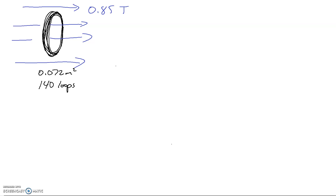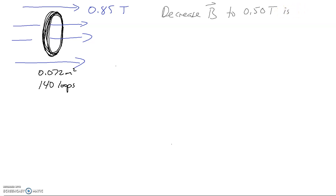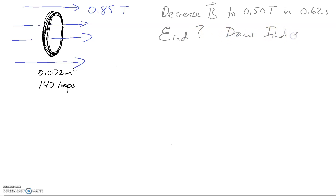In the last few videos, we've been working on both Faraday's Law and Lenz's Law, so let's see if we can bring some of those ideas together here. We've got 140 loops of wire with an area of 0.072 meters squared in a magnetic field of 0.85 Teslas. We're going to decrease the magnetic field to 0.50 Teslas in 0.62 seconds. We're going to find the induced EMF and draw the induced current for the loop.